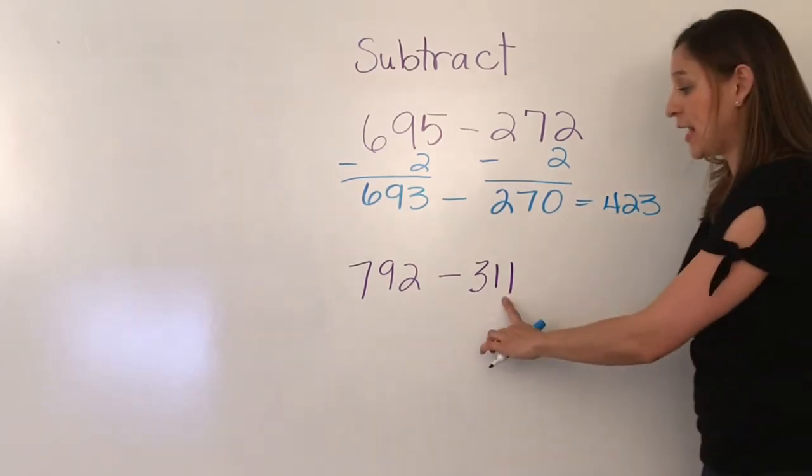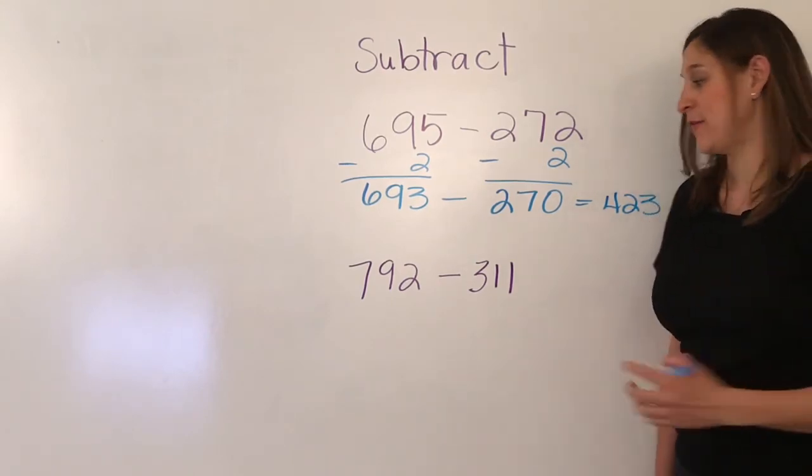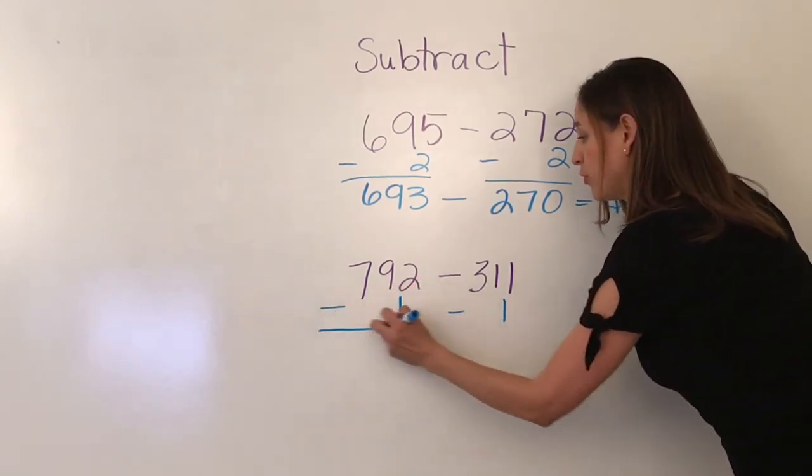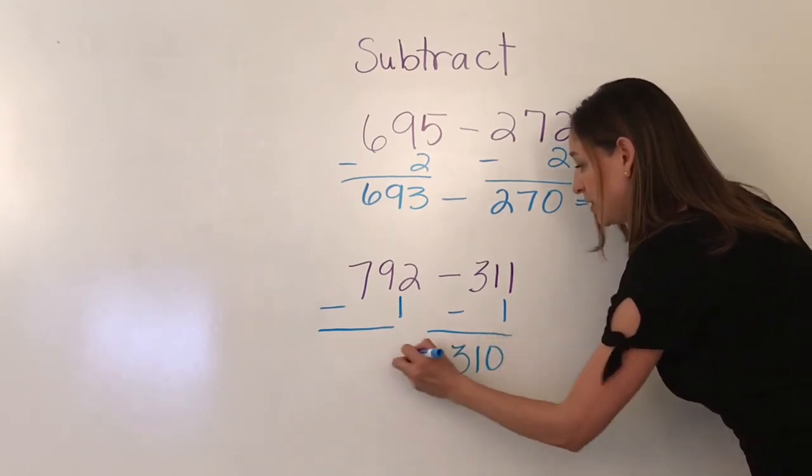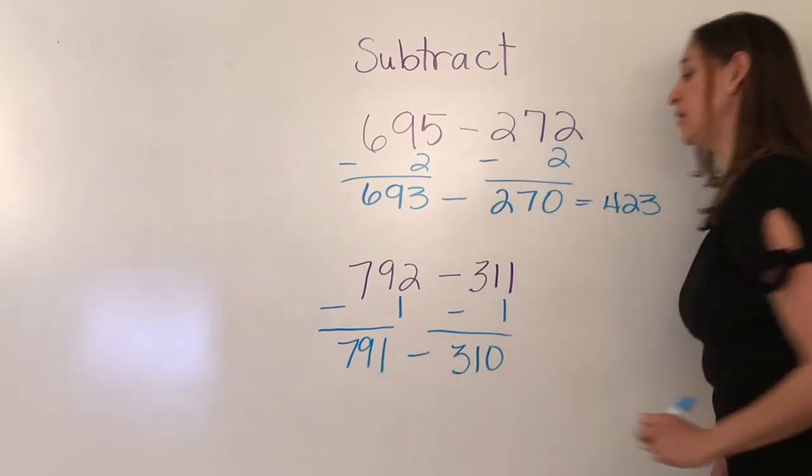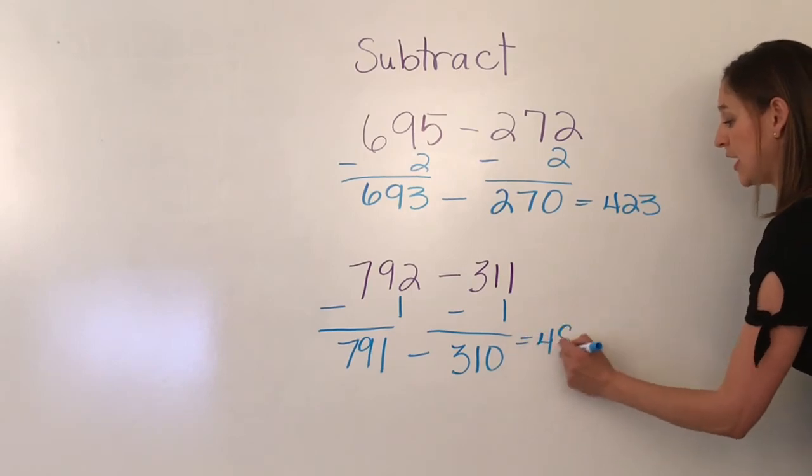Again, I have a number in the ones place that is less than 5, so I am going to subtract 1 on both sides. This will be 310, and now this is 791. 791 minus 310 equals 481.